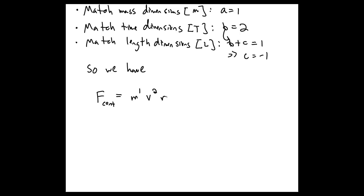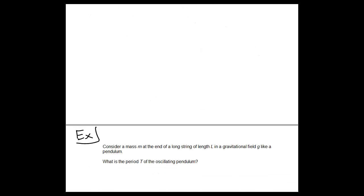So we can rewrite our expression for the centripetal force as mass to the power one, speed to the power two, and radius to the minus one — or mv² over r — which looks awfully familiar.